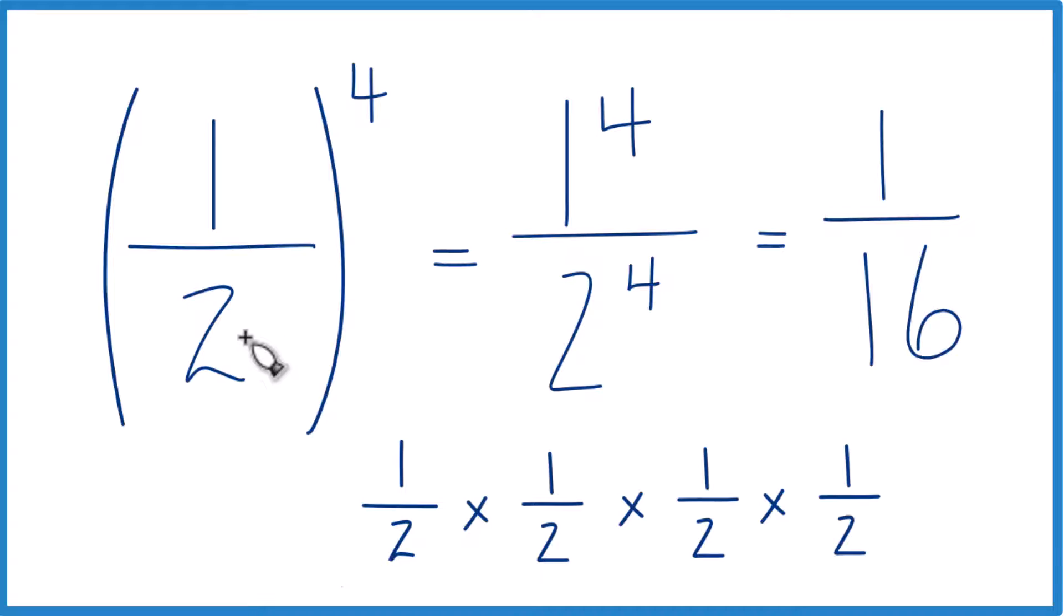So it ends up that one-half to the fourth power is equal to one-sixteenth. And it kind of makes sense, because we're taking a fraction of a fraction of a fraction of a fraction. This number should get smaller, and one-sixteenth, that's smaller than one-half, so it kind of makes sense.